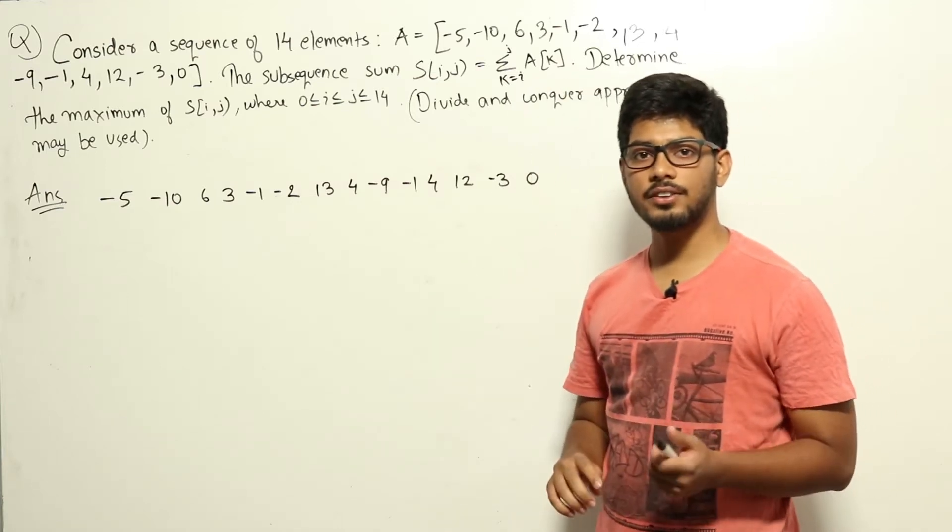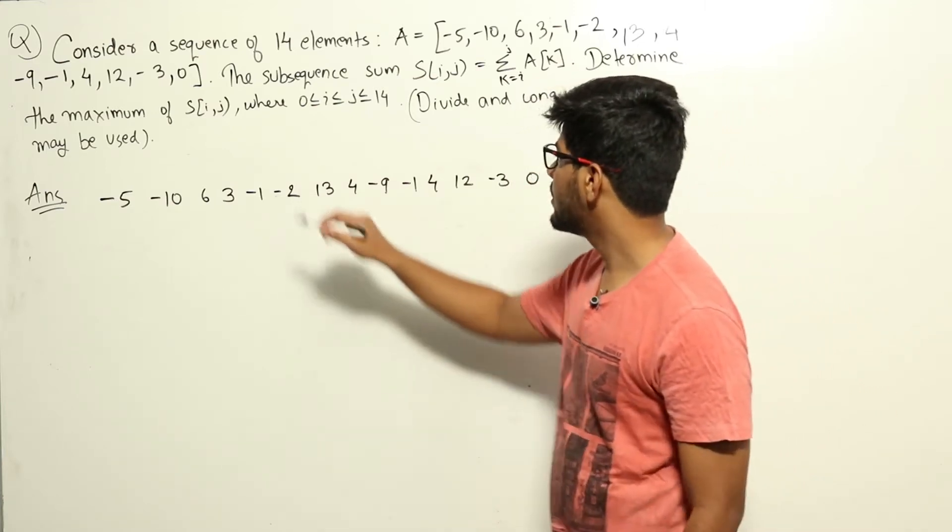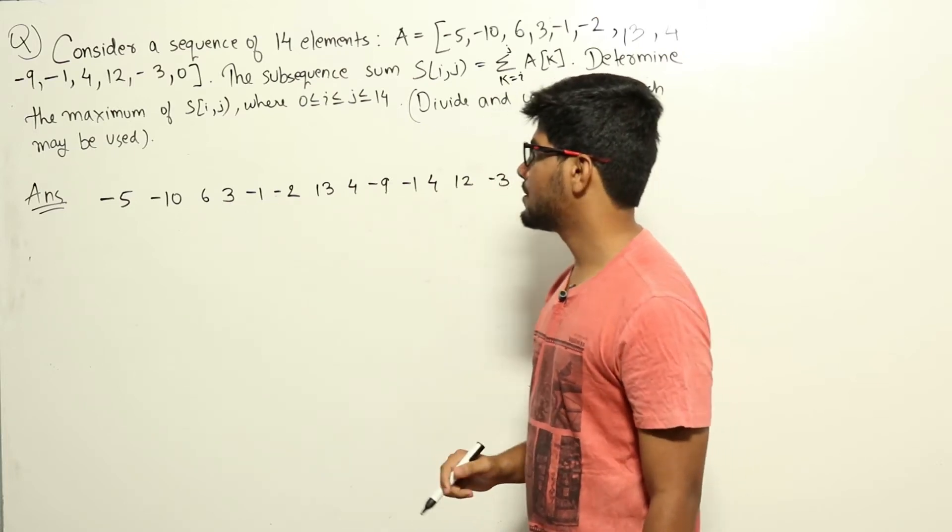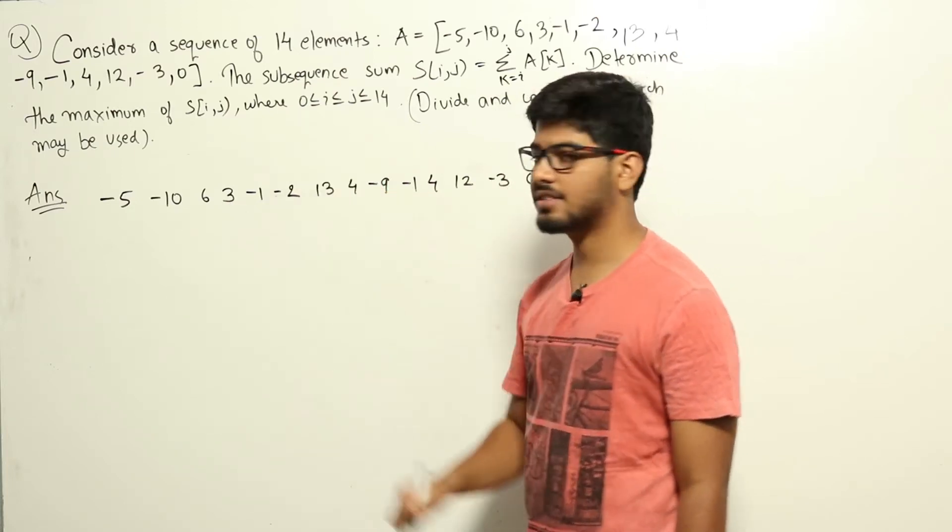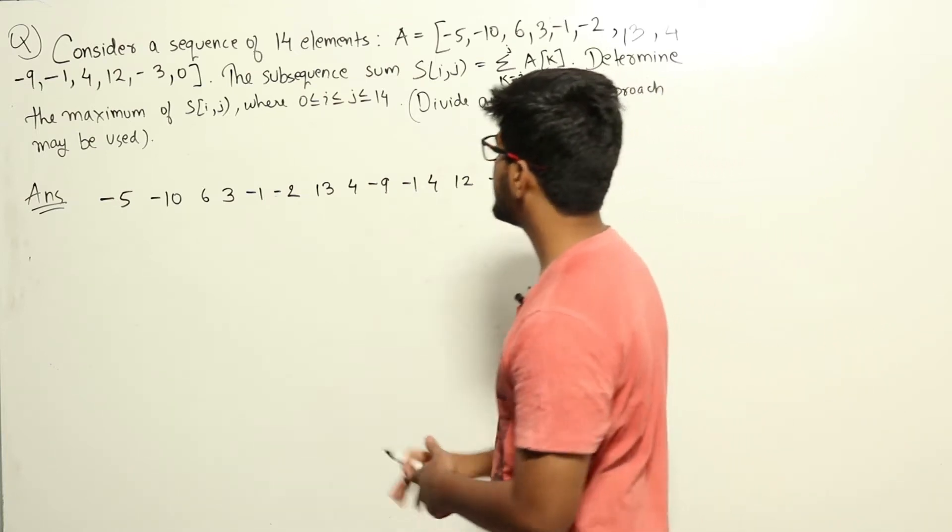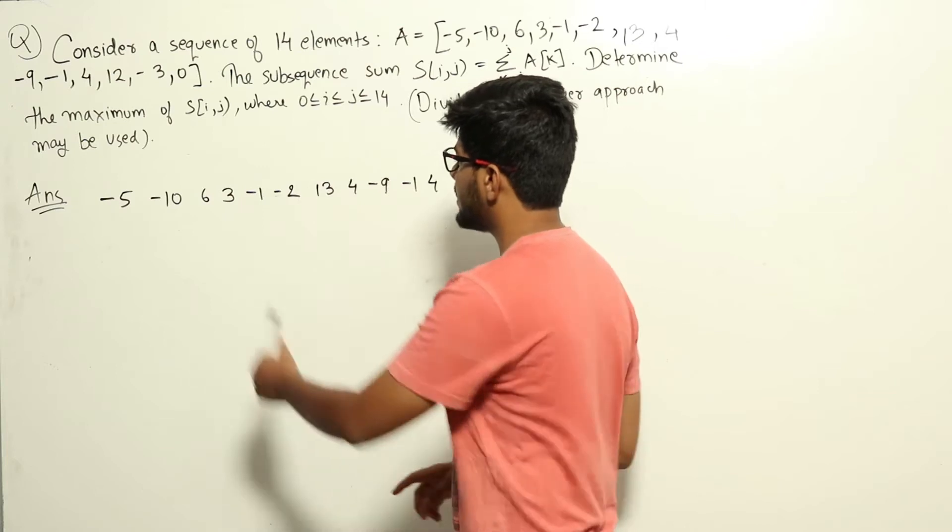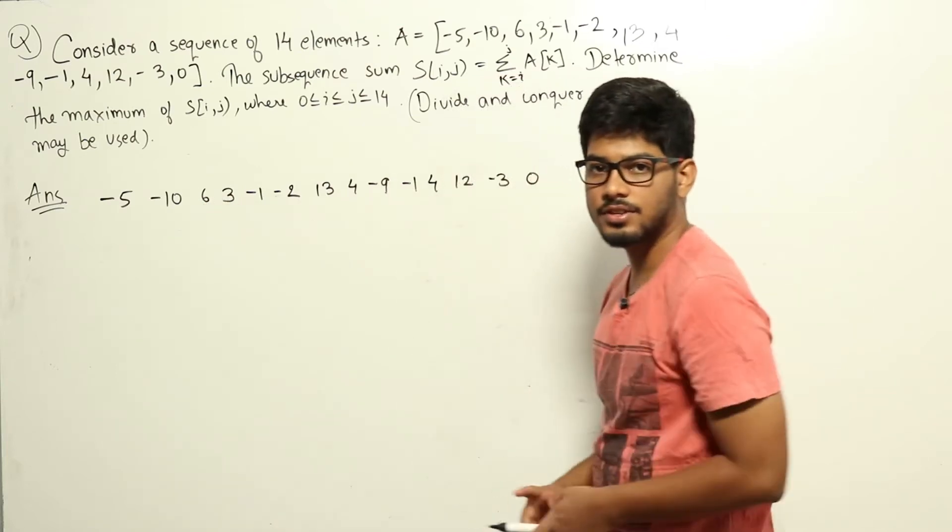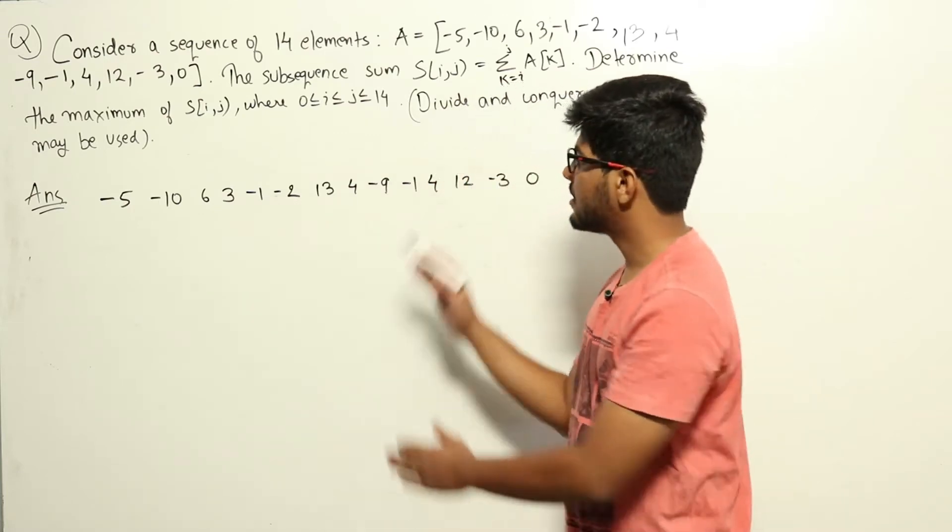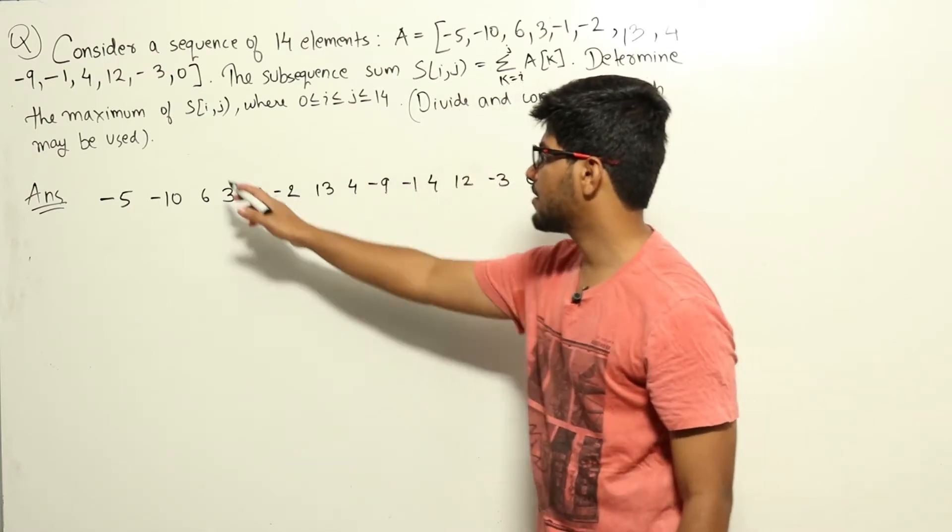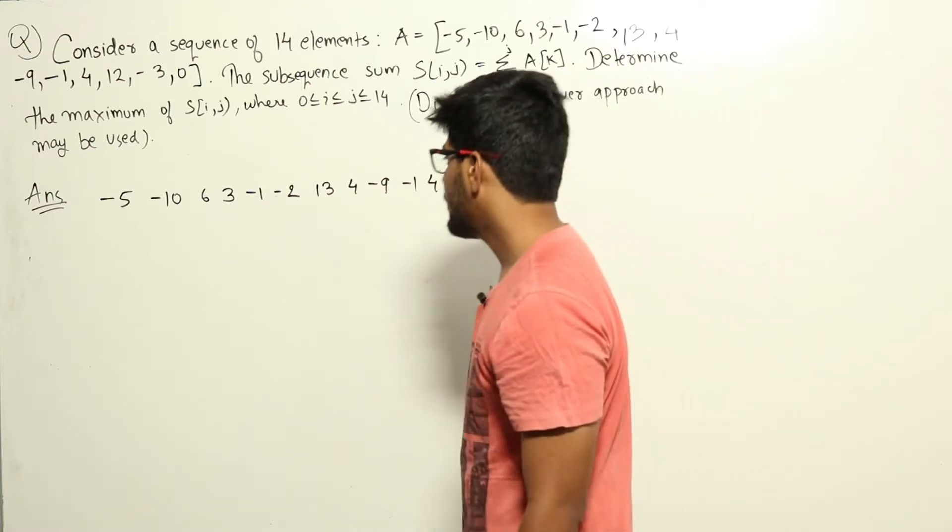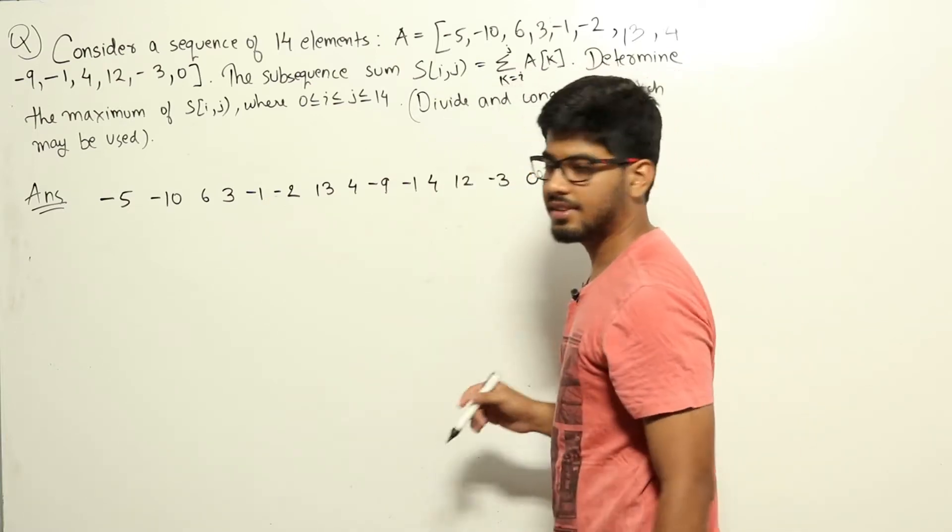So given this sequence of numbers, we need to find out the subsequence that will give the maximum sum and we need to find out what the maximum sum is. First of all, we're asking for subsequence here, that means the sequence should be contiguous. We can't just take the positive numbers and print the output. The sequence has to be contiguous starting from i to j, as given clearly here in this sigma function.